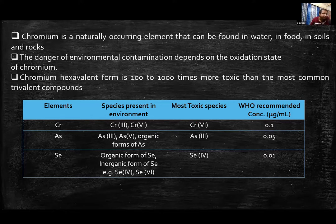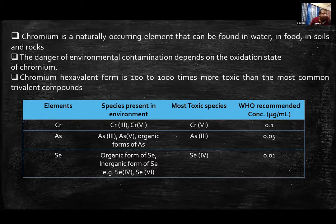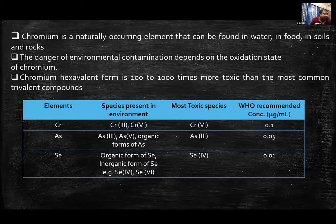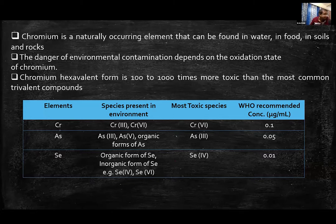Arsenic also exists in different organic and inorganic forms, and among all species, arsenic-3 is the most toxic. Selenium in small amounts is important for the body — during the COVID-19 pandemic, patients with higher selenium concentration in their bloodstreams showed higher immunity. However, excess selenium becomes toxic, and selenium-4 is the most toxic species. So not only is determining concentration important, but identifying the different forms of the species is also very important.